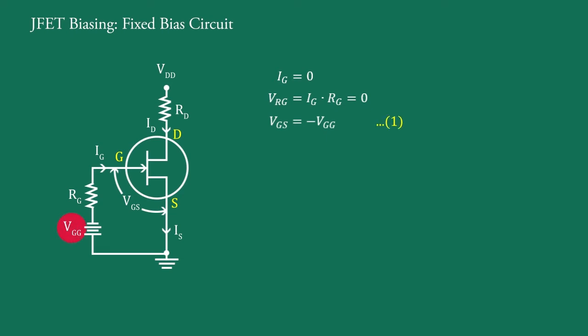Here VGG is fixed to bias the FET. Therefore, it is called fixed bias circuit.